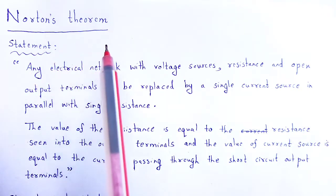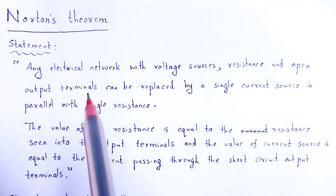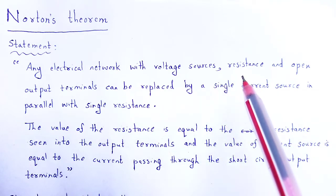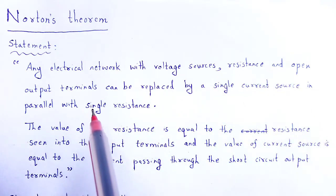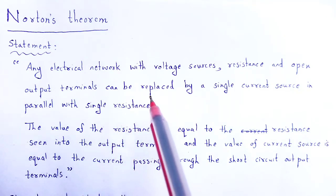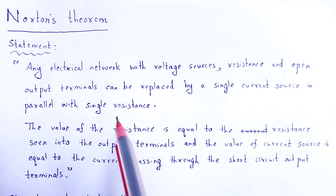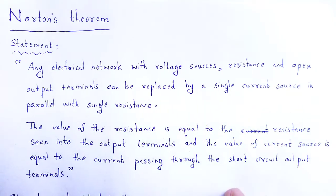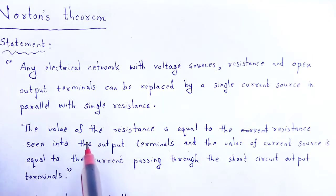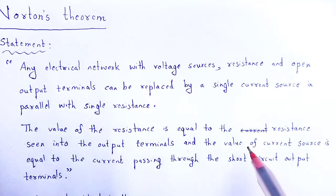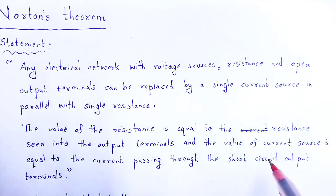Statement of Norton's theorem: in any electrical network with voltage source and resistance, the open output terminals can be replaced by a single current source in parallel with a single resistance. The value of that resistance is equal to the resistance seen into the output terminals, and the value of the current source is equal to the current passing through the short circuit output terminals.